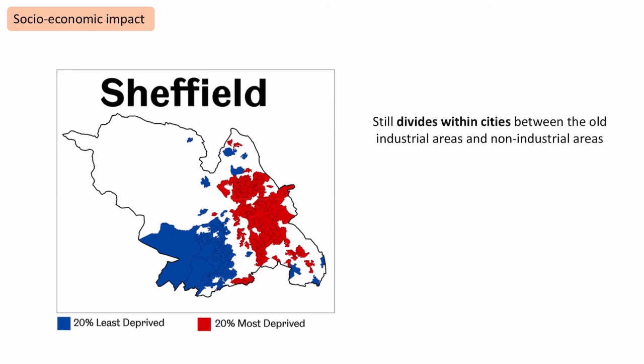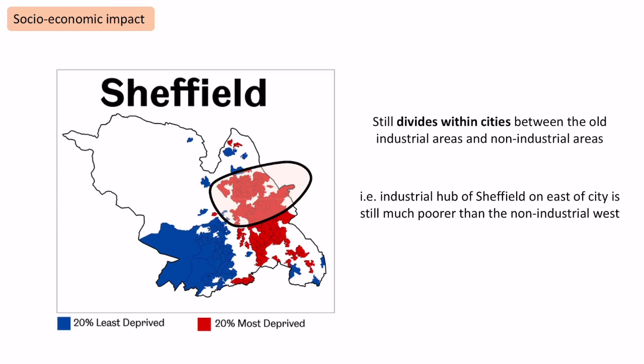Even within towns we can see huge divides between industrial and non-industrial areas. Here's an example of Sheffield, which was famous for steel making. The industrial sector on the east of the city is still much poorer today than the non-industrial west, highlighted in blue. So we can see these social and economic impacts not only on a national scale — where many industrial towns in the north are worse off than places in the south — but also within cities, between industrial and non-industrial areas.